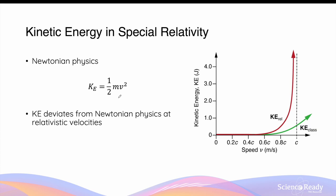Mass dilation also has implications on the kinetic energy of objects. As we know, in Newtonian physics, kinetic energy is given by half mv squared. If the mass does not remain constant and becomes dilated as the object approaches the speed of light, the kinetic energy will also deviate from the prediction made by Newtonian physics. As the object approaches c, the kinetic energy of the object also tends towards infinity.